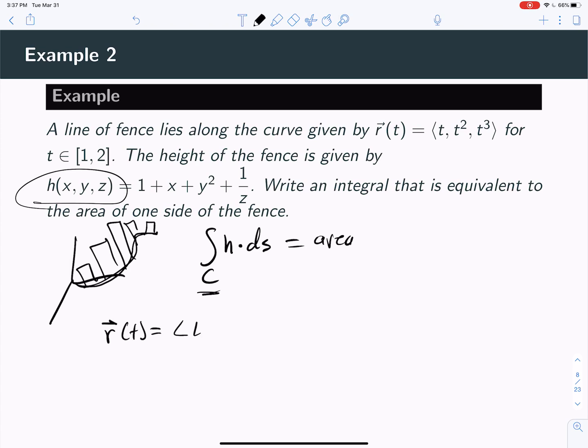So we need to turn what's r(t). Well, r(t) is t, t², t³. So the velocity as you go along this fence would be 1, 2t, 3t². And so the length, or the speed if you will, the velocity vector's length would be the square root of 1 + 4t² + 9t⁴.